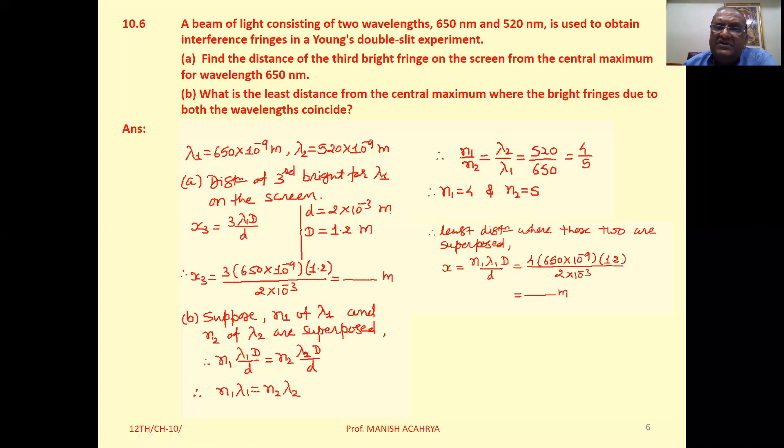Now suppose on the screen at distance x, n₁ bright for lambda 1 and n₂ bright for lambda 2 superpose to each other. Now when these two superpose, it implies that the distance of both n₁ and n₂ is the same. So we can write n₁ lambda 1 D by d equals n₂ lambda 2 D by d. D cancels, so n₁ lambda 1 equals n₂ lambda 2.